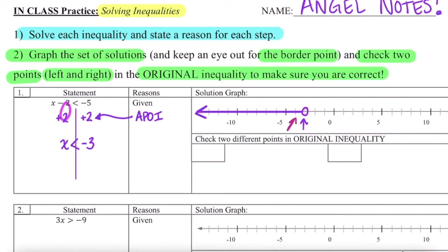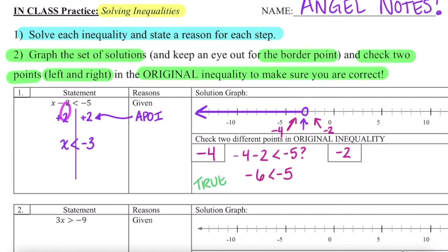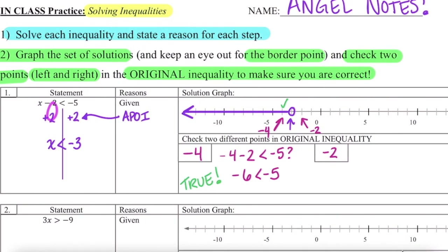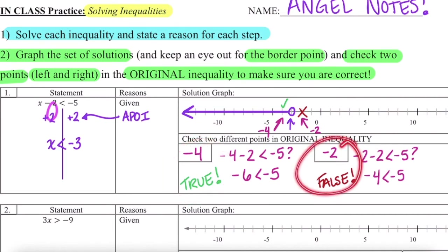I'm going to choose negative 4 as my point on the left and negative 2 as my point on the right, and I'm just plugging them in to see which one is true and which one is false. Does negative 4 minus 2 come out less than negative 5? That's negative 6 — is negative 6 less than negative 5? Yes, this is true, and it should be because negative 4 is on my solution line. Let's check negative 2: is negative 2 minus 2 less than negative 5? Is negative 4 less than negative 5? This is false — we wanted this to be false because negative 2 is not one of our solutions. Because negative 4 was true and negative 2 was false, we know our solutions and our border point are in the right spot.